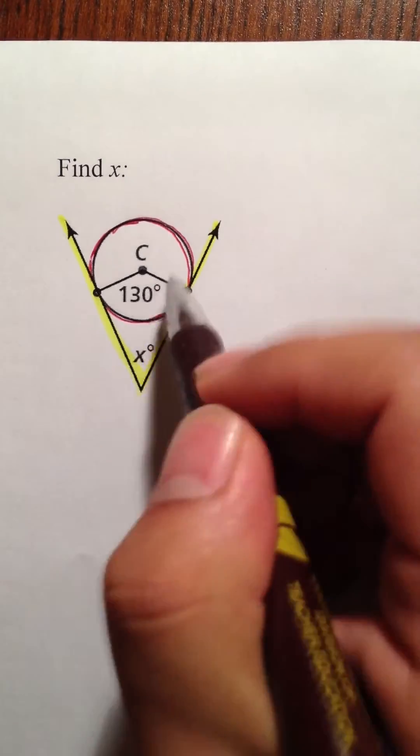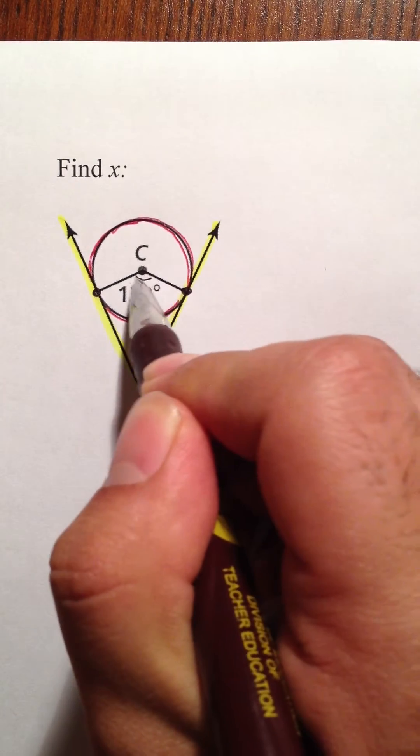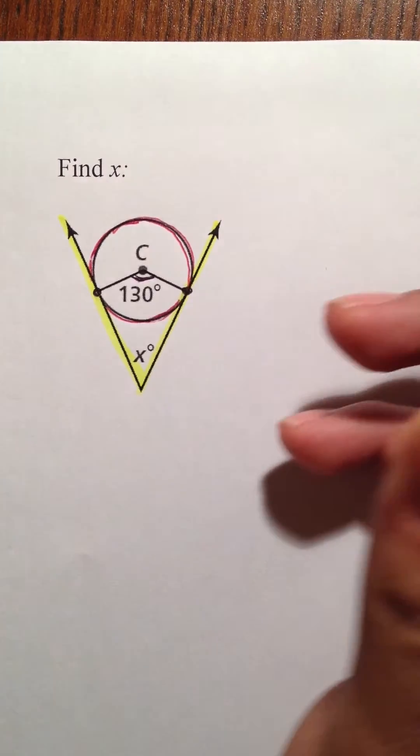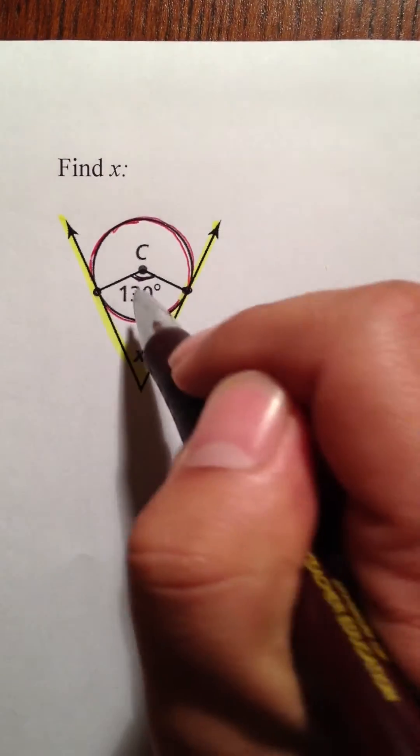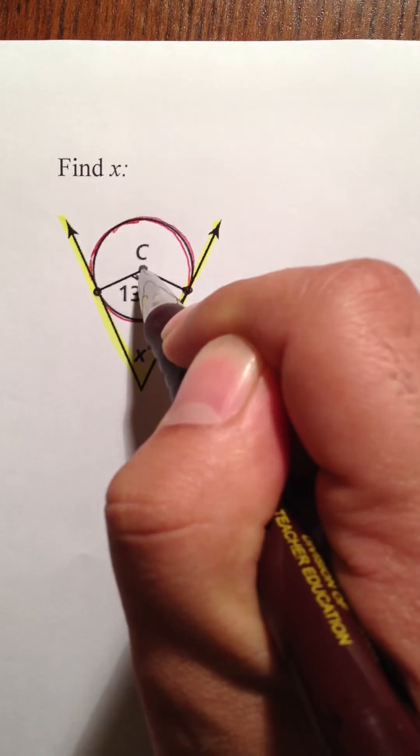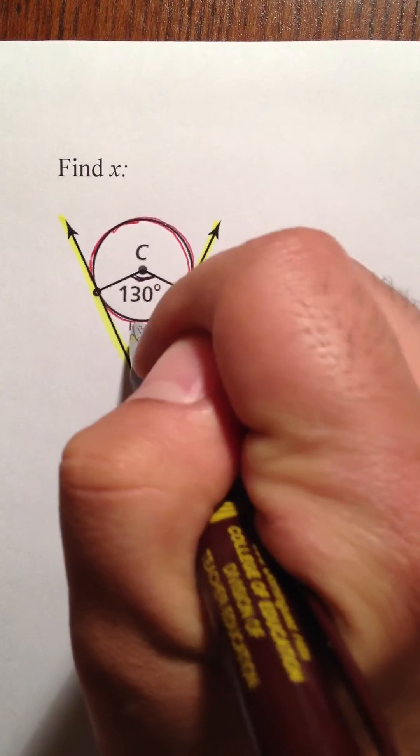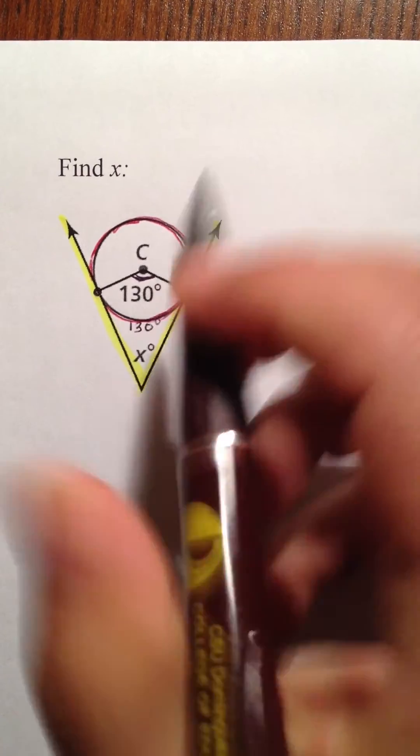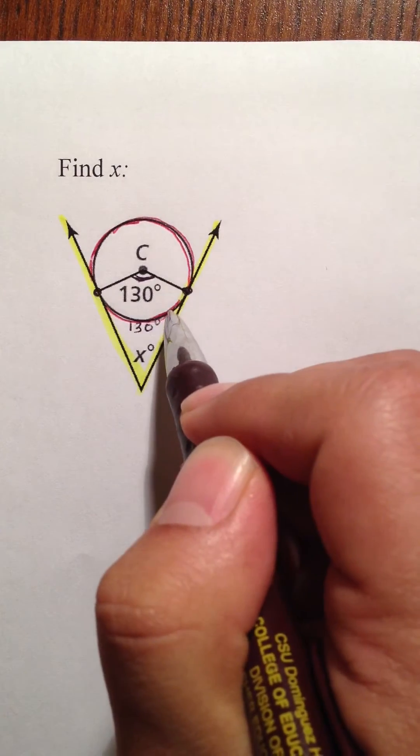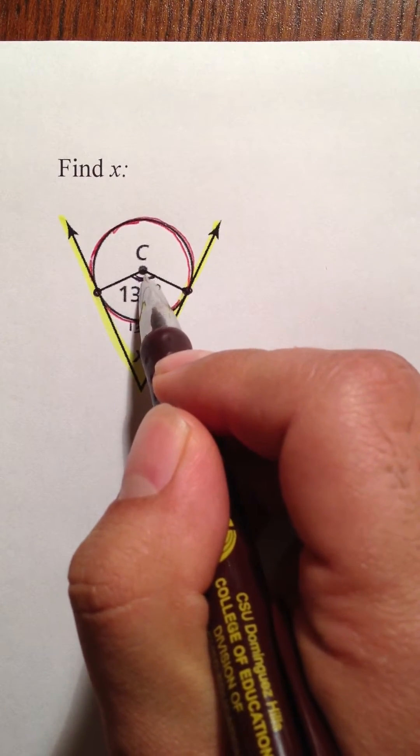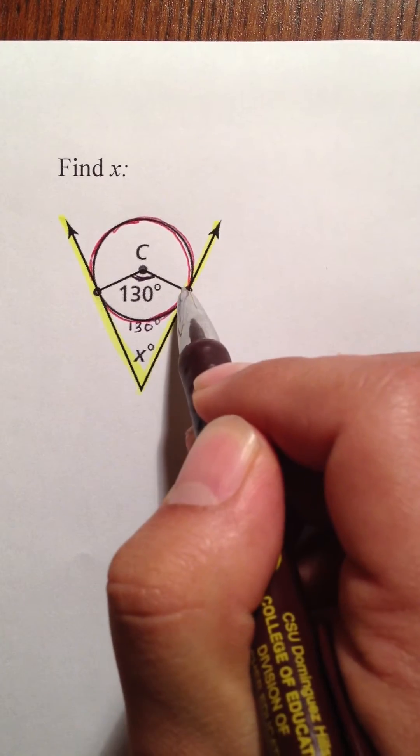However, the only degrees you know is right here. Well, that information can actually be very useful. When you have a degree that's created from the center, that actually matches the arc degree on the outside. So, I can tell you right now that this arc is 130 degrees because this angle touched the center, and it created 130 degrees.